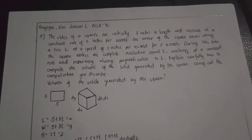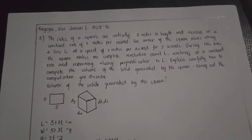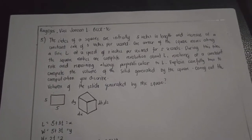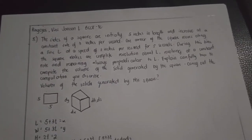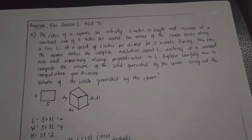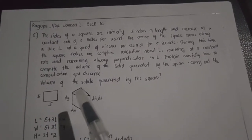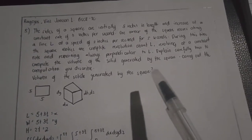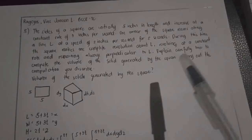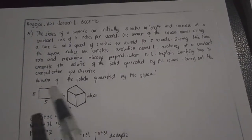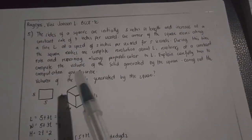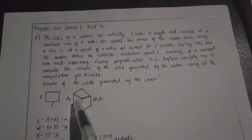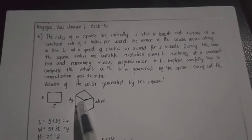During this time, the square makes one complete revolution about L, revolving at a constant rate and remaining always perpendicular to L. Explain carefully how to compute the volume of the solid generated by the square, and carry out the computation you described.